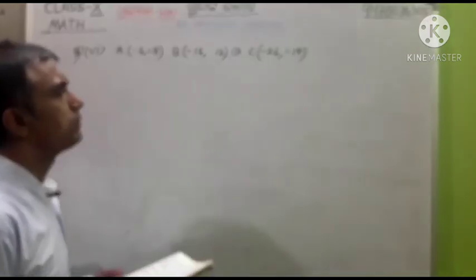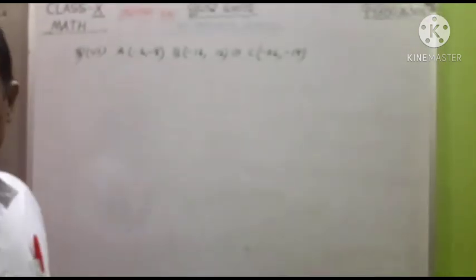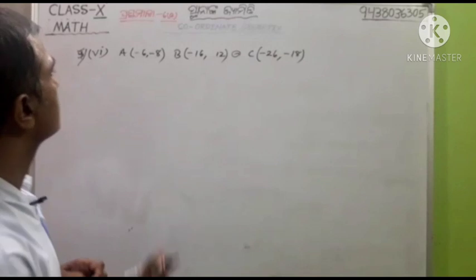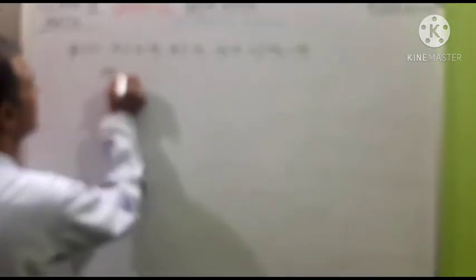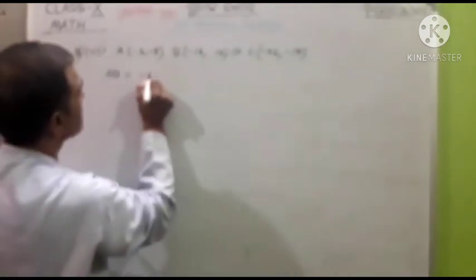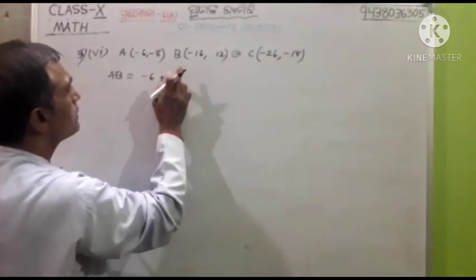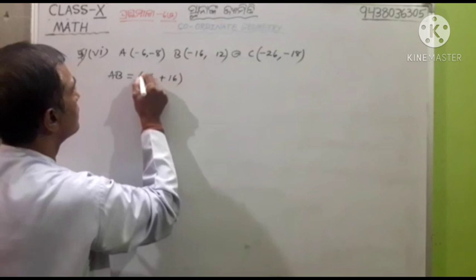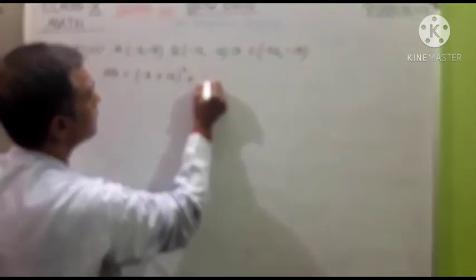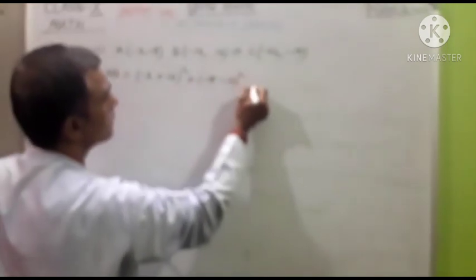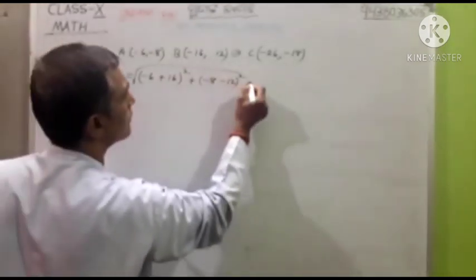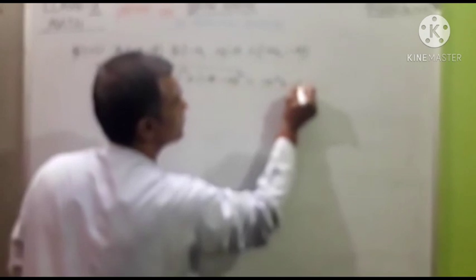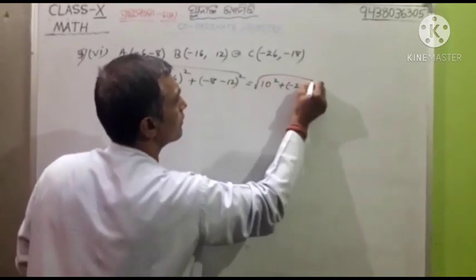We will find the distance. Taking A and B outside first. A: minus 6, minus minus 16, write plus 16 directly — plus 16, the square plus minus 8 minus 12, plus square. Now root over is equal to A: square plus A: square, minus, plus square. Is equal to...